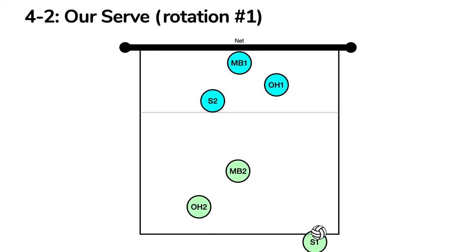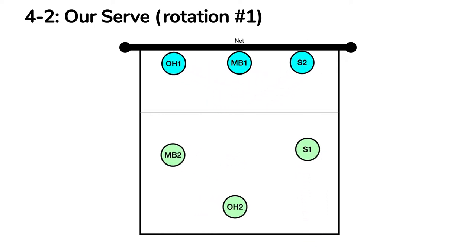So how does that apply to the 4-2 offense? We're going to go through the rotations and look at each rotation when we're serving and then when we're receiving serve. This is rotation 1, where we've got setter 1 back to serve, and setter 2 is at the net in position 3. As the server contacts the ball, outside hitter 1 moves to the left side to block and setter 2 moves to the right side to block. Outside hitter 2 in the back row moves to middle back to play defense, and middle blocker 2 moves to the left side to play defense. Setter 1 moves straight ahead to right back after she serves.